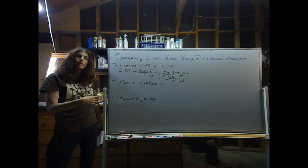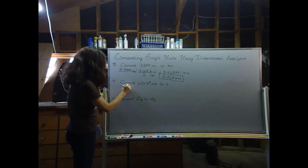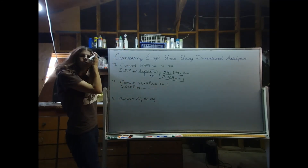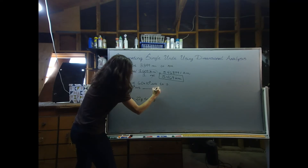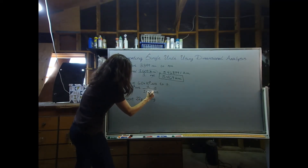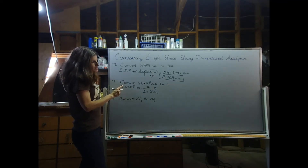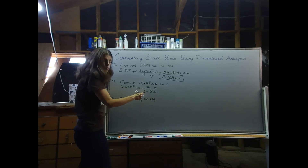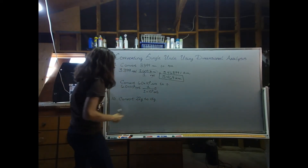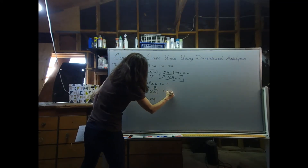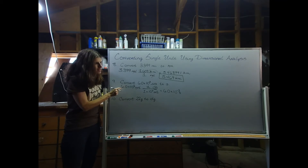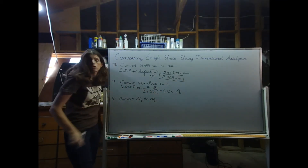Next, convert microseconds to seconds. We have 6.0 times 10 to the third microseconds. Put microseconds in the denominator and seconds in the numerator. A second is much bigger, so the number one goes with the second and there are one million microseconds in one second. In the calculator, 6×10³ divided by 1×10⁶ gives 6.0 times 10 to the negative third seconds. Your calculator may drop the trailing zero, but maintain it because you have two sig figs and need two sig figs in the answer.